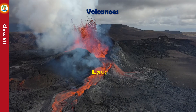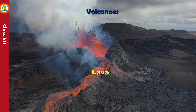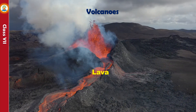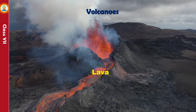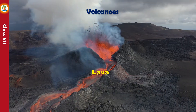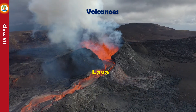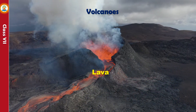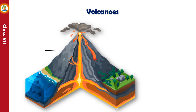A volcano is an opening in the earth's crust through which magma comes out onto the earth's surface. The magma that reaches the earth's surface is called lava. The passage through which lava travels is called the vent. The top of a volcano has a cup-shaped or funnel-shaped depression known as a crater.